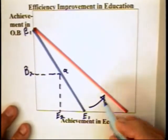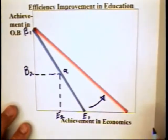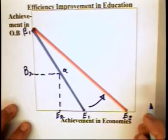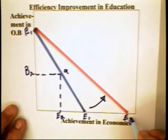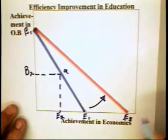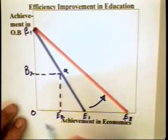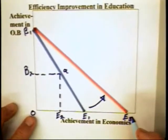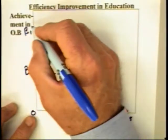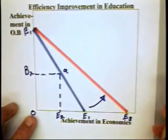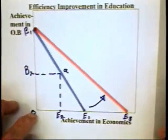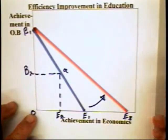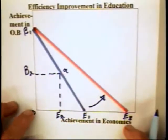Why does it move out? Well, with the technological improvement, the individual who spends all of his time in the study of economics can move to E3 and learn zero organizational behavior. Since there is nothing that's been done in the organizational behavior class, the individual stays at B1. The curve has to move between B1 and E3.